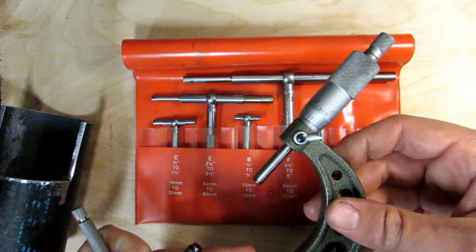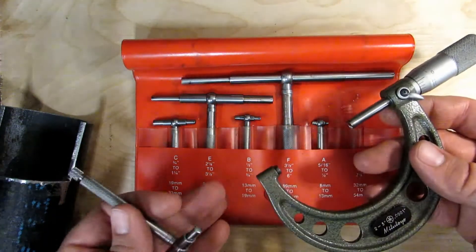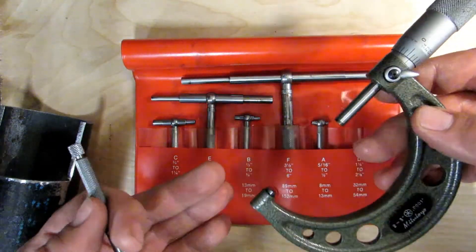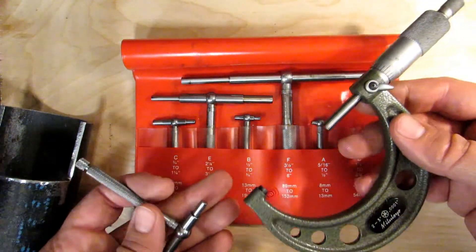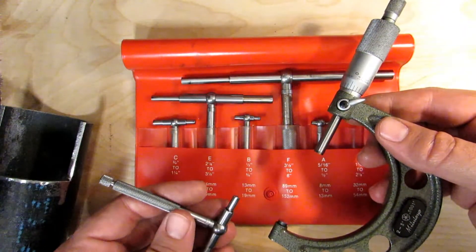When you do that, you end up with a smaller measurement than what you really actually have. Now that can screw you up if you're going for something with a tight tolerance, like you're trying to make a press fit. You think that you're good, and then you try to mate the two parts together and they just slip into each other instead of pressing like they should.